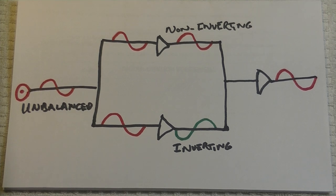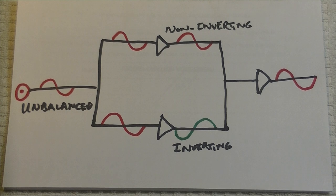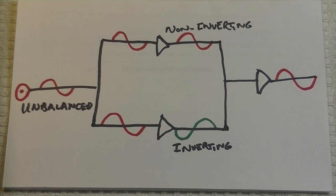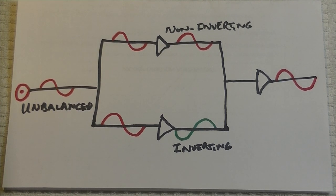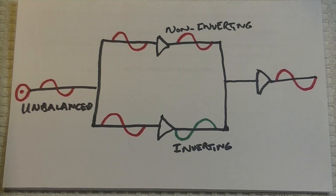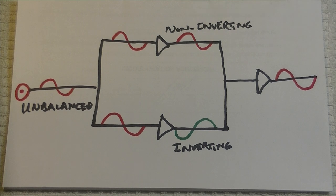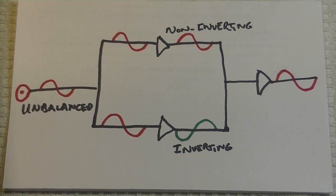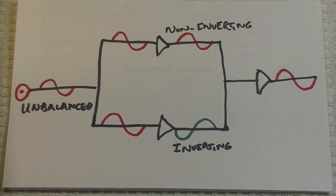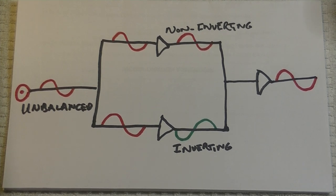Balance. A balanced circuit has two. Yup. Two separate signal paths. And when they arrive at your power amp, they need to be recombined into a single unbalanced signal.